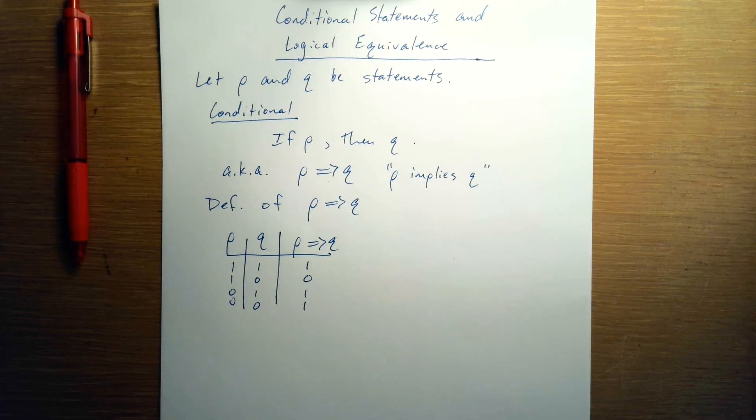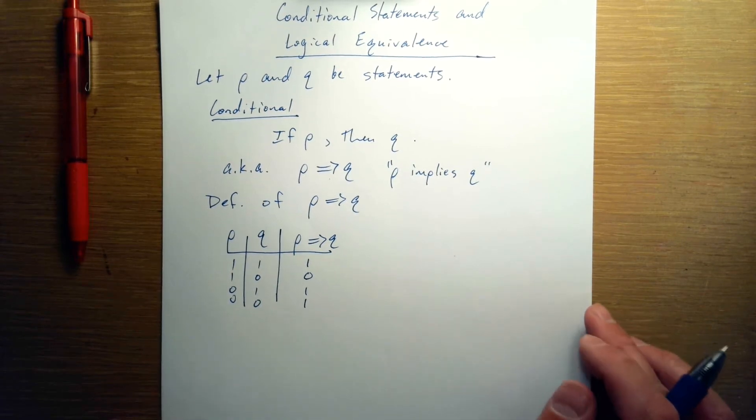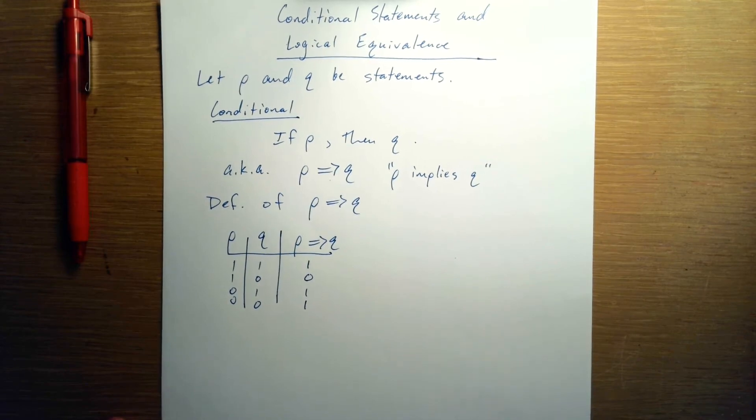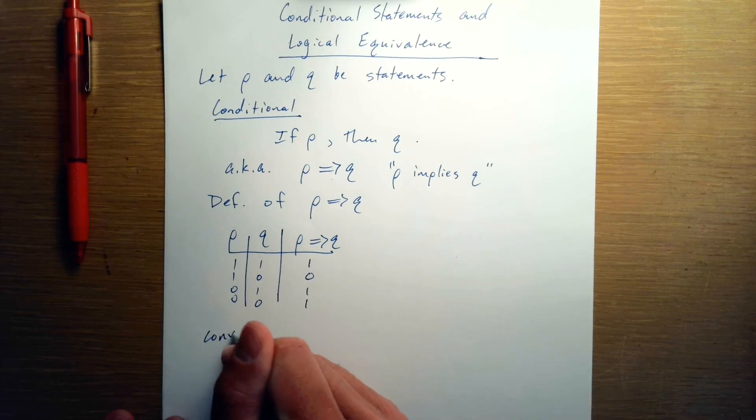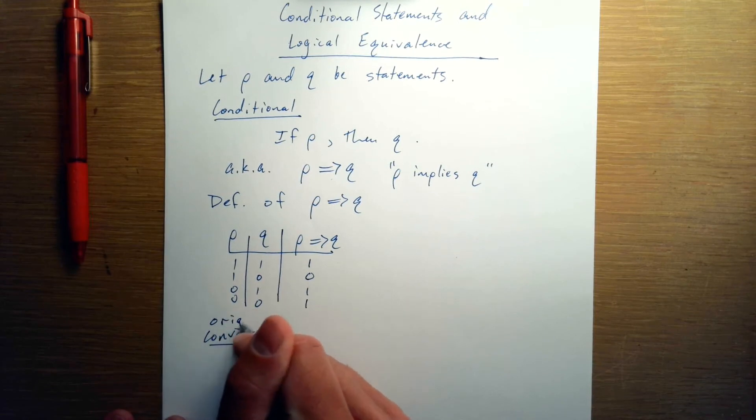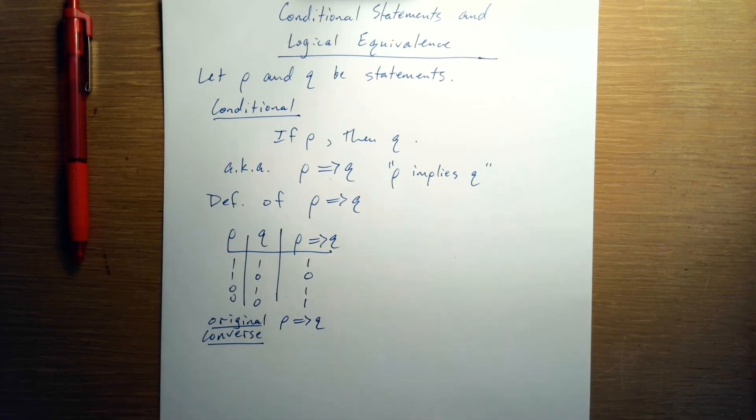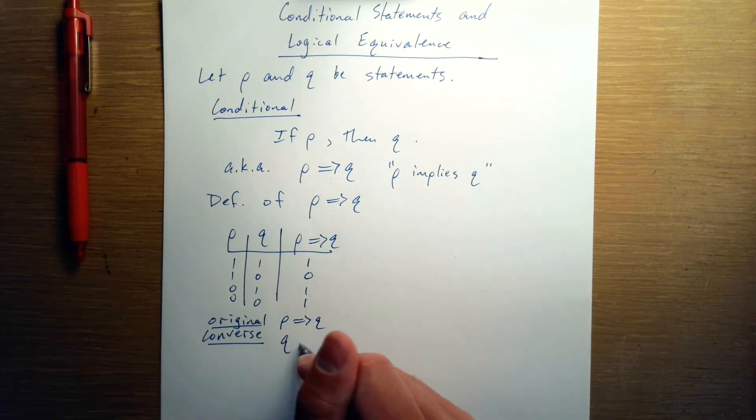A conditional statement has several statements that are derived from it or related to it. The first statement is called the converse. So we're considering now our original statement is P implies Q. Then we get a few other statements that we can define based on this original statement. The converse is where you switch the direction. So this is Q implies P.